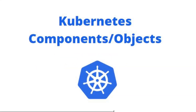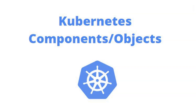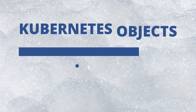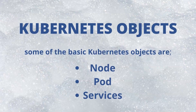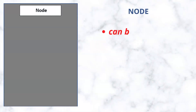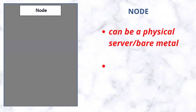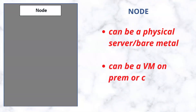To proceed in our studies, especially before we can understand the Kubernetes architecture, we need to understand some basic Kubernetes terminologies — in other words, Kubernetes components, objects, or features. The first Kubernetes object to talk about is the node. Nodes are just servers; they can either be a physical server, that is bare metal, or a virtual server.